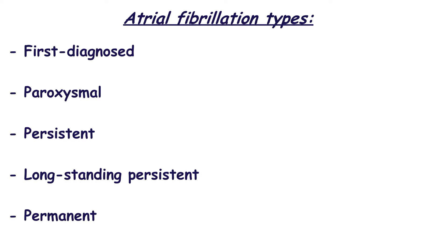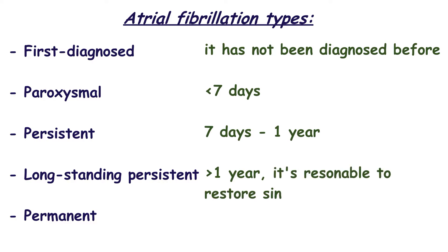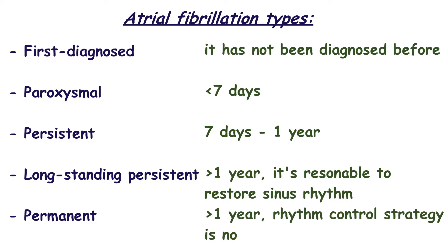There are five types of atrial fibrillation: first diagnosed, paroxysmal, persistent, long-standing persistent, and permanent. First diagnosed is considered when it has not been diagnosed before. Paroxysmal type continues up to seven days and can be self-terminating or cardioverted. Persistent atrial fibrillation continues longer than seven days. When it lasts more than one year and the doctor decides to restore sinus rhythm, it is long-standing persistent. When it lasts more than one year and rhythm control strategy is not accepted, it is permanent.